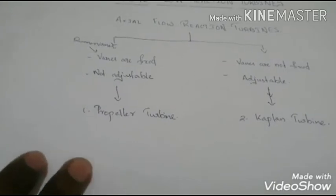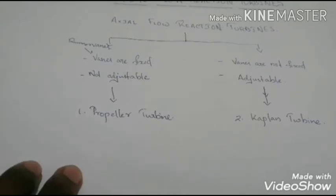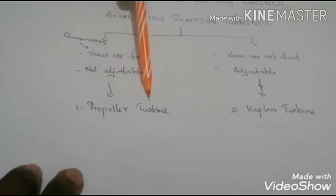And an axial flow reaction turbine can be classified on the basis of the vane motion. By vanes we mention runner vanes. And if the runner vanes are fixed and they are not adjustable, that they remain stationary, the turbines are usually called propeller turbine.